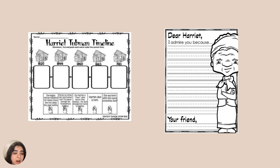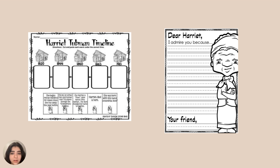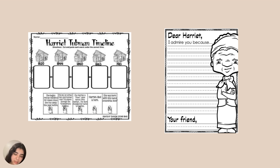The first worksheet is the Harriet Tubman timeline. Students will have to match up the picture and description to the timeline. Then students will write a letter to Harriet, saying why they admire her, what they learned about her, or anything that will help me see if they learned something or what they found interesting.